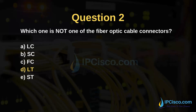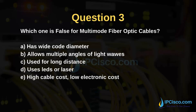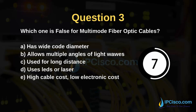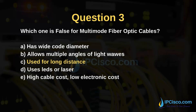Which one is false for multi-mode fiber optic cables? Options: has wide core diameter, allows multiple angles of light waves, used for long distance, uses LED or laser, high cable cost and low electronic cost. The answer is C — used for long distance is false; that is true for single-mode fiber.